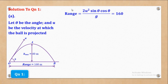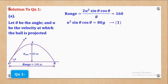We know that range is given by the formula: Range = 2U² sin θ cos θ / G. The range is 160 meters, so equating and substituting gives us U² sin θ cos θ = 80G. We call this equation 1.